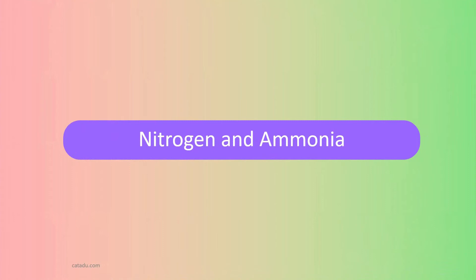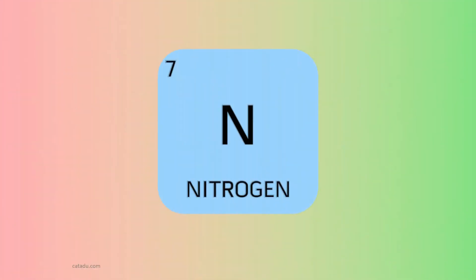This video is about nitrogen and ammonia. Nitrogen is an element that is expressed by N with atomic number 7. It has 5 electrons in the outer shell.